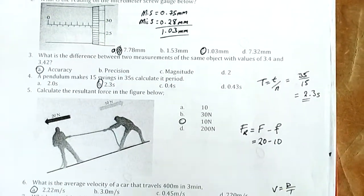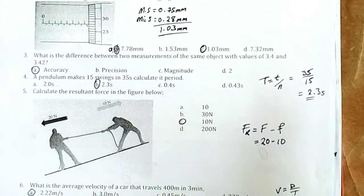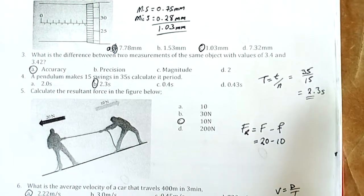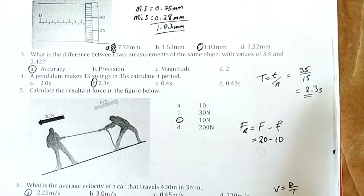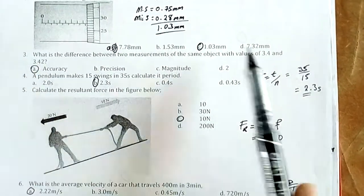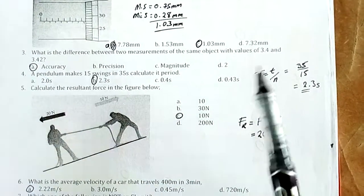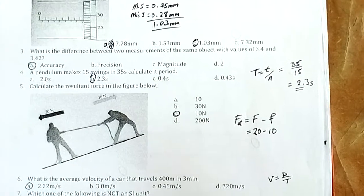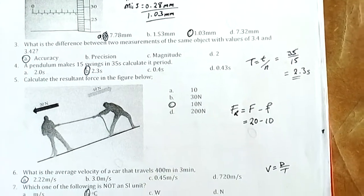Question 3: What is the difference between two measurements of the same object with values of 3.4 and 3.42? The difference there is accuracy. This value is more accurate than this one, so accuracy is the difference. This one is more detailed, giving you more information about the degree or magnitude of the measurement.